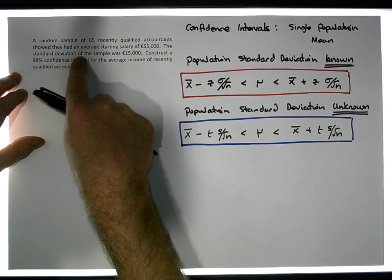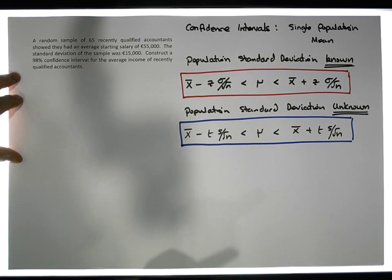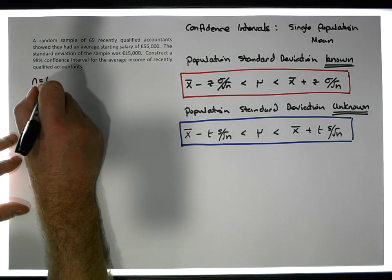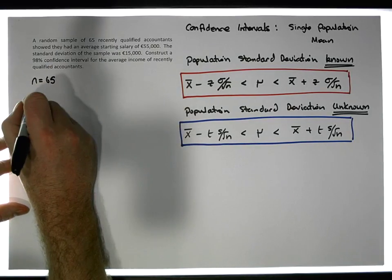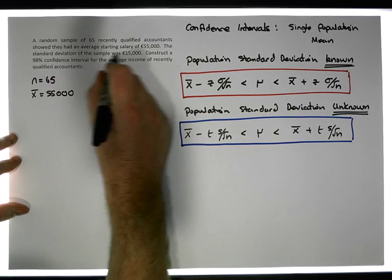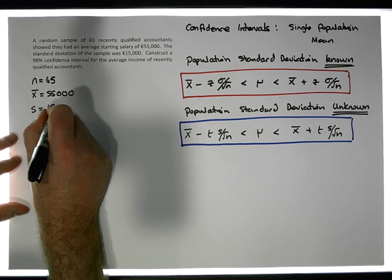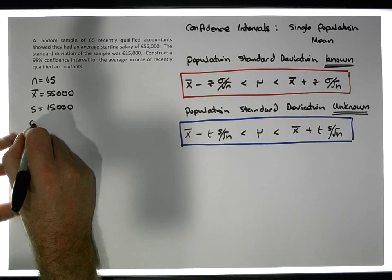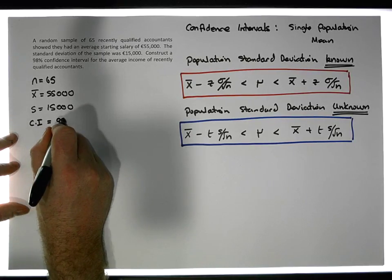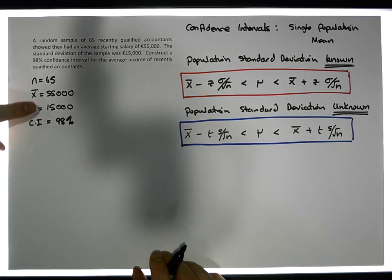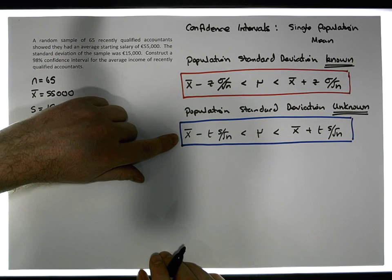What I like to do is extract out all the information that's been provided. We have a sample of size n equals 65, the sample mean x-bar equals €55,000, the sample standard deviation s equals €15,000, and the confidence interval we need to construct is 98%. We're being provided with s, the sample standard deviation, so we're going to choose the t-distribution formula.